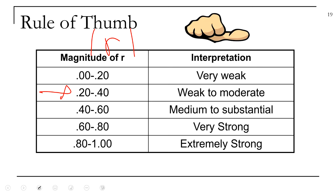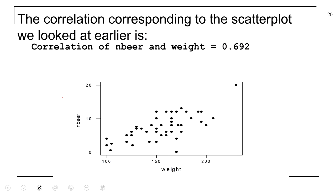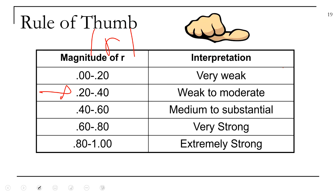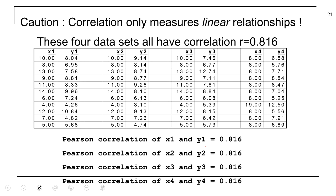This is what a correlation matrix looks like — notice it has ones on the diagonals, and the units don't matter anymore. The correlation between wins and payroll is about 0.37, indicating a weak positive relationship. For the beer data, the correlation is about 0.7 between number of beers and weight, which we'd call a strong relationship.